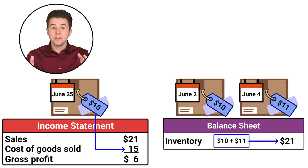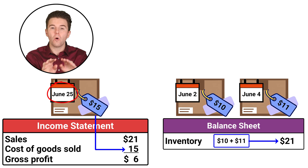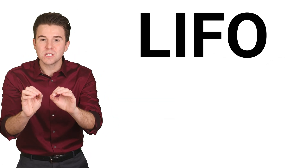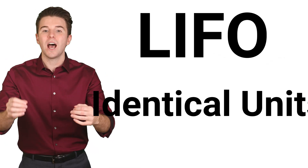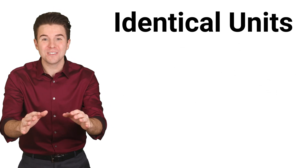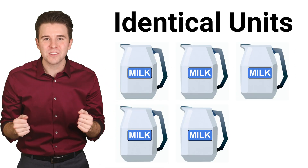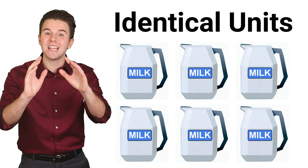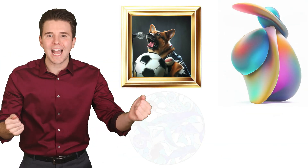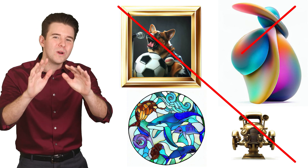As you can see, under LIFO, the last or most recent unit purchased is sent to cost of goods sold on the income statement. The LIFO method can only be used when our inventory consists of identical items. For example, if we are selling identical gallons of milk, we could use the LIFO method. However, if we are selling one-of-a-kind custom artwork, we would not use LIFO.